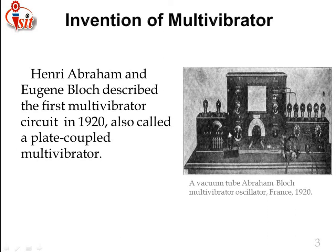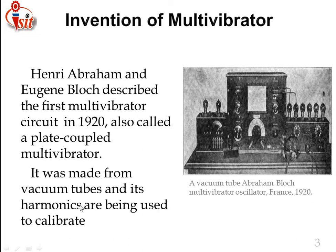Just see here the image related to that multivibrator, to get an idea of how that multivibrator looks. It is a vacuum tube Abraham-Bloch multivibrator oscillator invented in France in 1920. It was made from vacuum tubes and its harmonics were used to calibrate a wave meter — that is, whatever harmonics were generated by that multivibrator were calibrated with the wave meter.